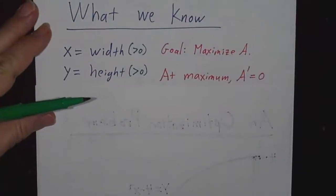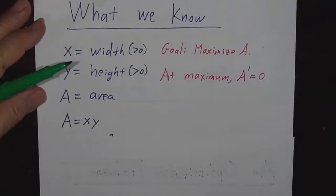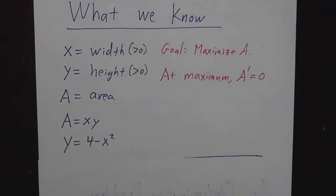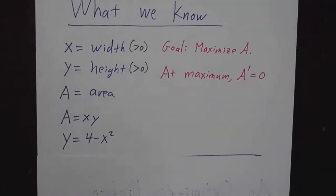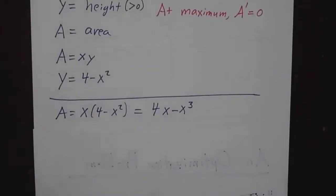So x is our width, positive. Y is our height. A is our area. A is xy. And y is 4 minus x squared, because we're on the parabola. Well, that means that our area is x times 4 minus x squared, so it's 4x minus x cubed. And we want to know, where is that maximized?